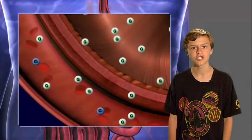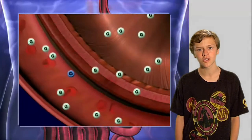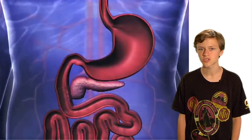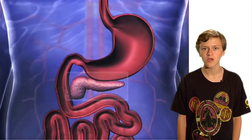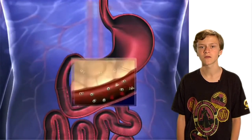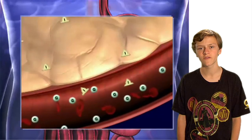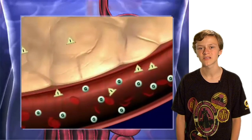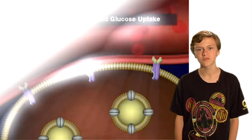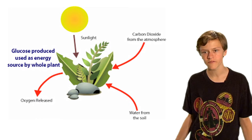Our bodies change 100% of the carbohydrates we eat into glucose. This affects our blood sugar levels quickly, within an hour or two after eating. Glucose is good for the environment because it has an energy source — without it, plants would die and humans would not be able to live.